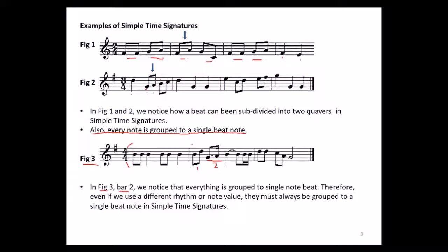The third beat is a crotchet tied to the fourth beat, where a quaver and two semiquavers make up one crotchet. Therefore, even if we use a different rhythm or note value, they must always be grouped to a single beat note in simple time signatures.